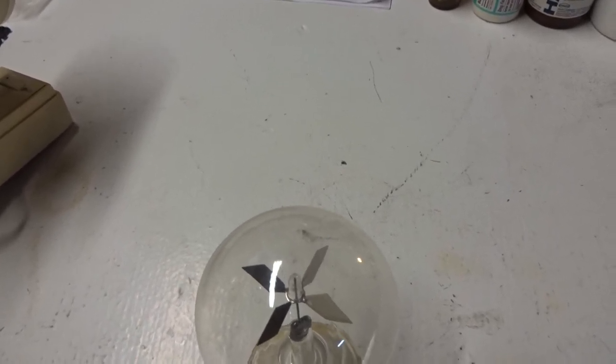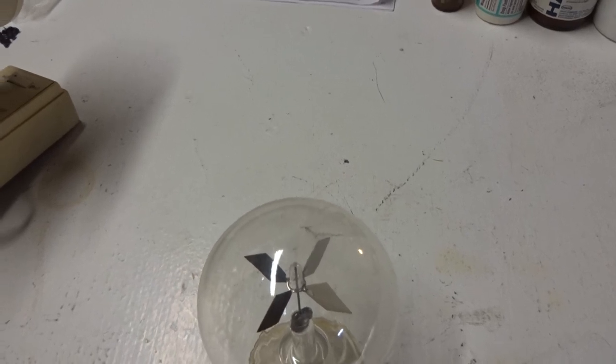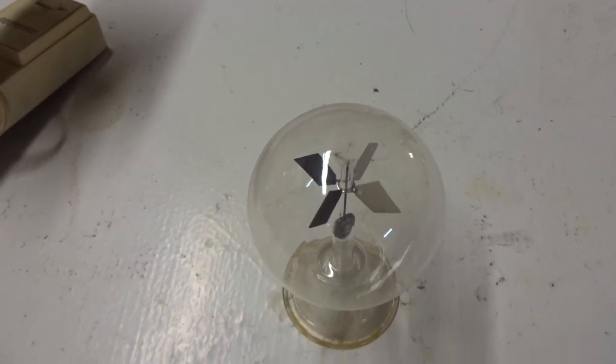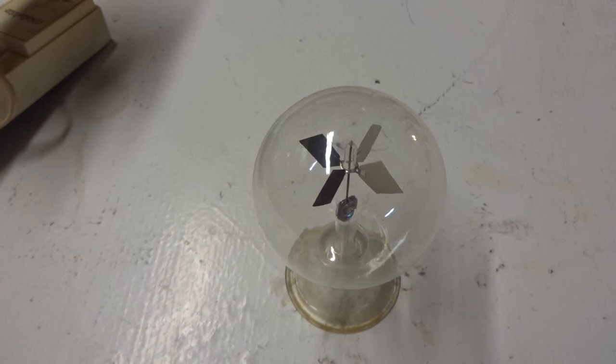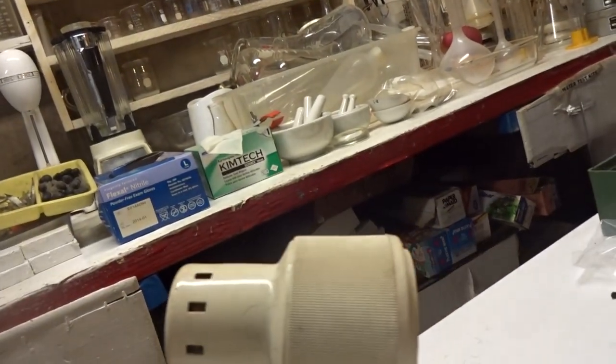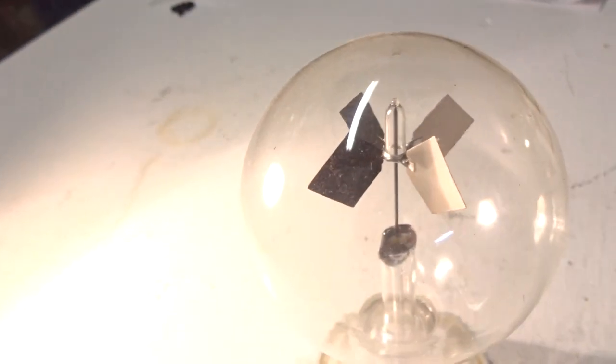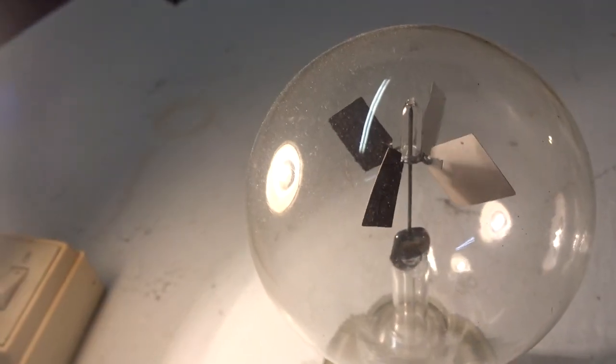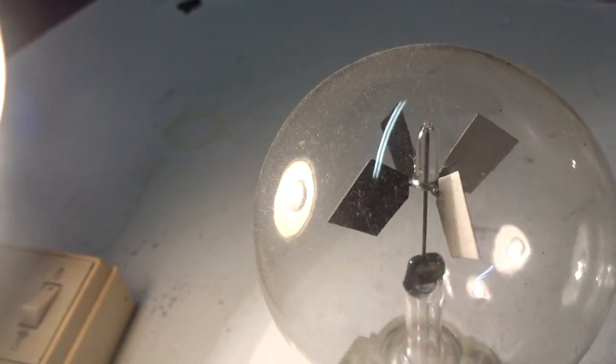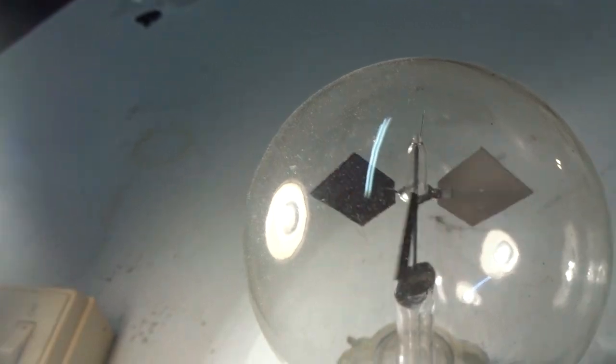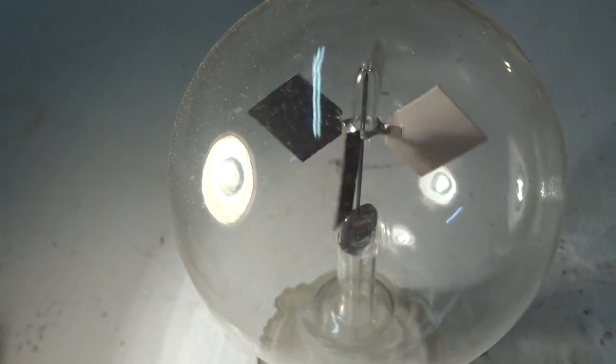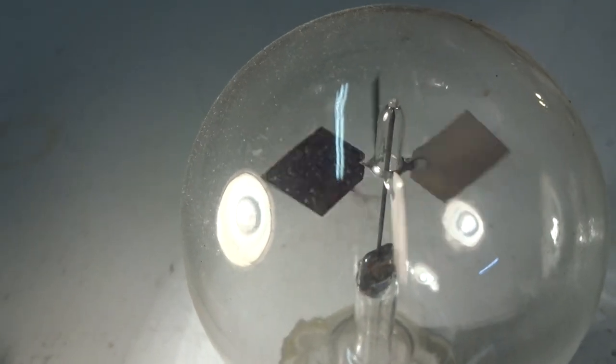But he noticed that light caused the vanes to spin. We will observe how light causes these vanes to spin. I have a light source here. I'll turn it on and aim it toward the radiometer. And you see it spinning.